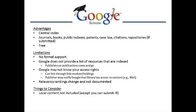Types of things you'll find in Google Scholar can include journals, books, publicly available indexes, patents, case laws, and citations.